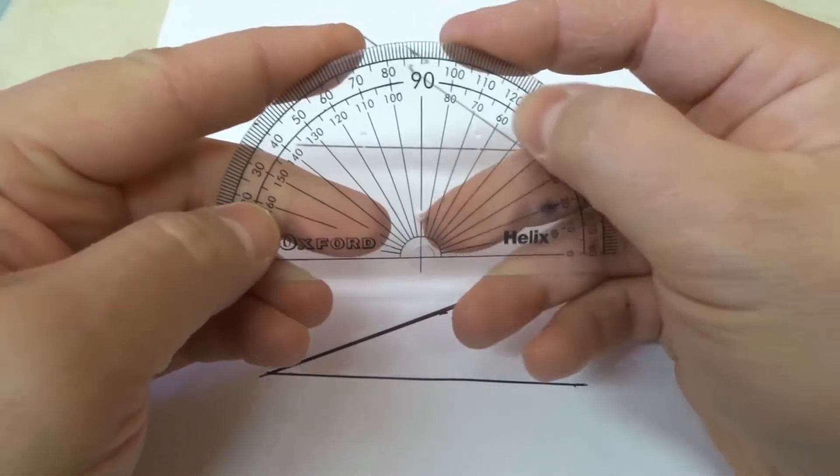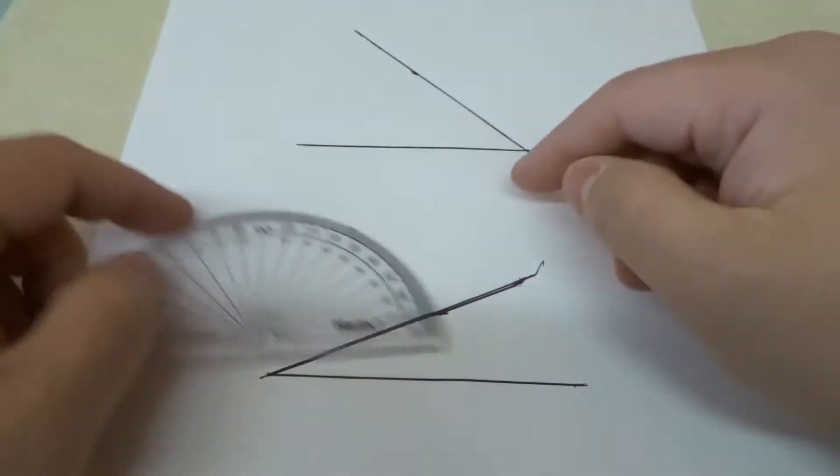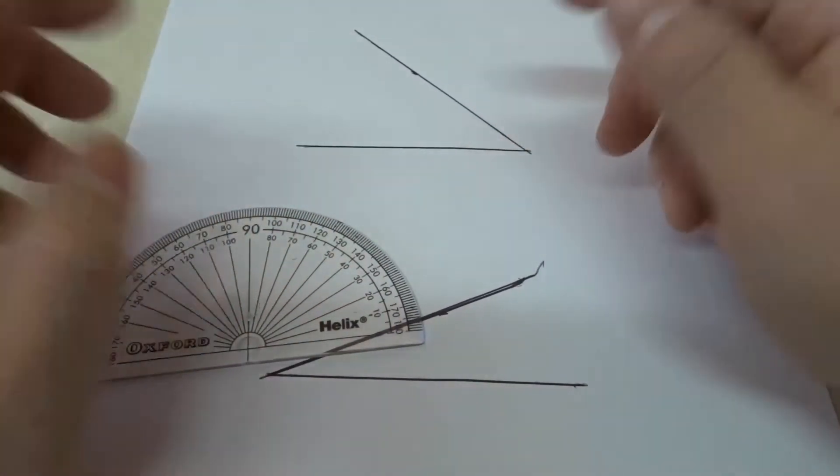And then these numbers on the sides here on the outside, there's an inner set and an outer set that actually will tell you the angle depending on which side the angle is on. Okay, it's really easy to do.